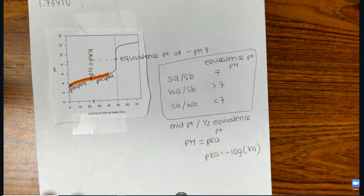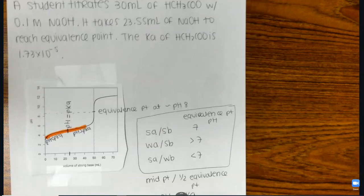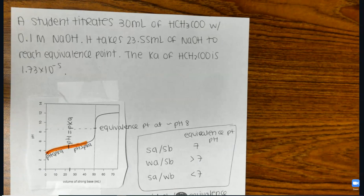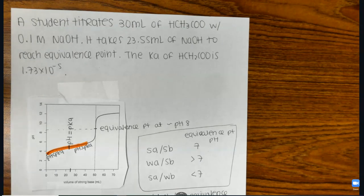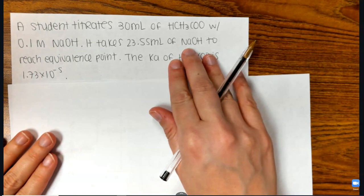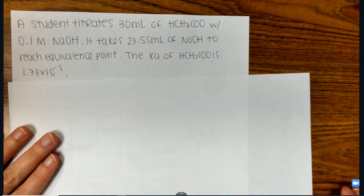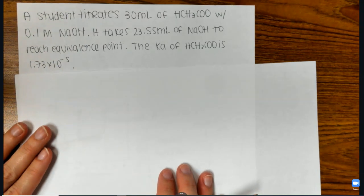So let's look at this question again, what I was given. A student titrates 30 milliliters of acetic acid with 0.1 NaOH. It takes 23.55 milliliters of the NaOH to reach the equivalence point. And then we're given the Ka of this acid.